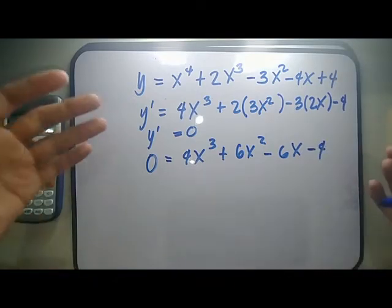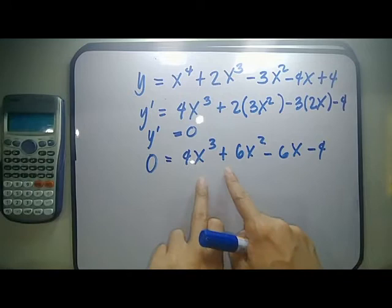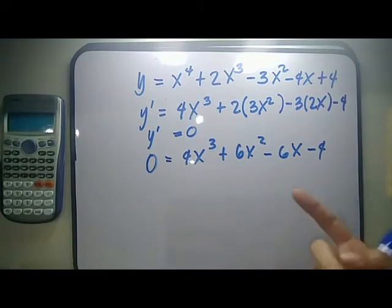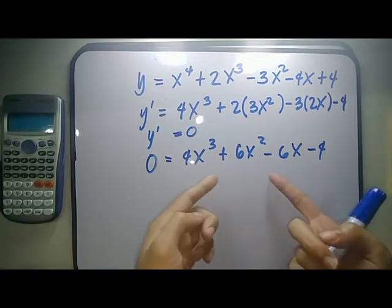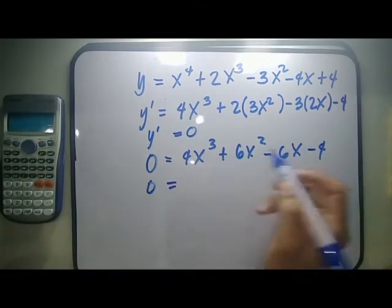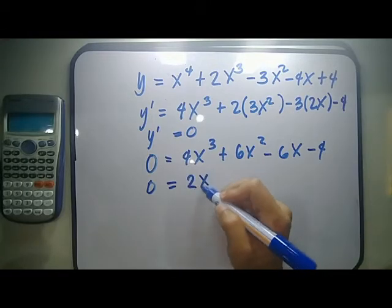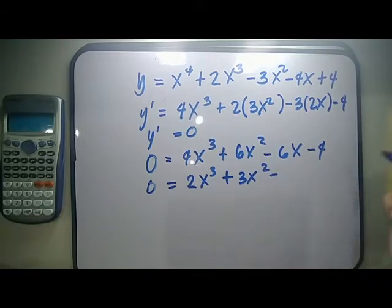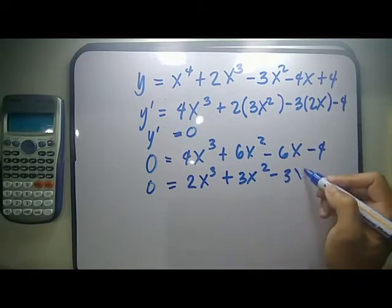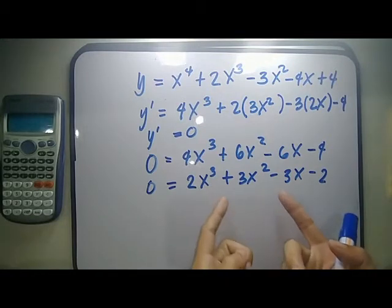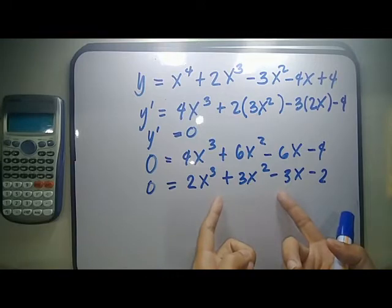The second step is to equate your y prime to 0. So if y prime is 0, you have 0 equals 4x cubed plus 6x squared minus 6x minus 4. By equating y prime to 0, you can get the critical points. Now, 2 is a common factor, so you can divide both sides by 2, giving you 0 equals 2x cubed plus 3x squared minus 3x minus 2.